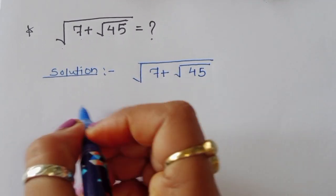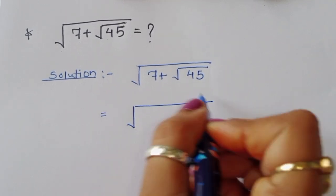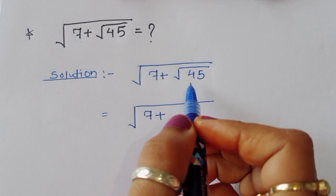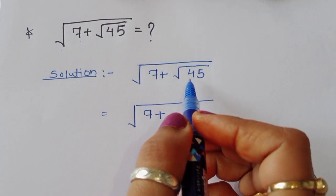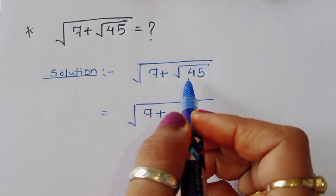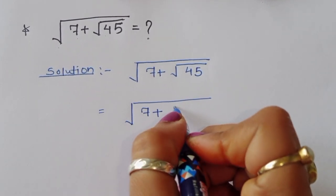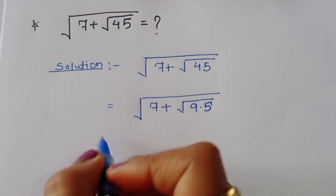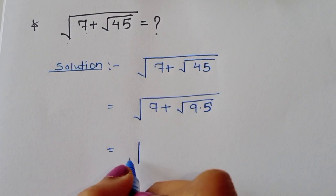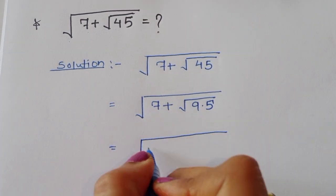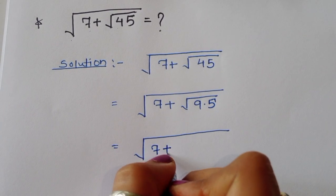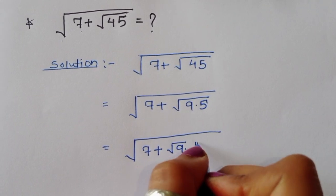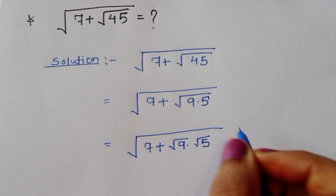Now we can solve this. We have square root of 7 plus square root of 45. We can convert 45 into 9 times 5, so 45 equals 9 times 5. Now we can separate this term as square root of 9 times square root of 5.